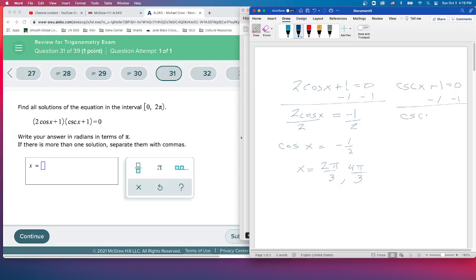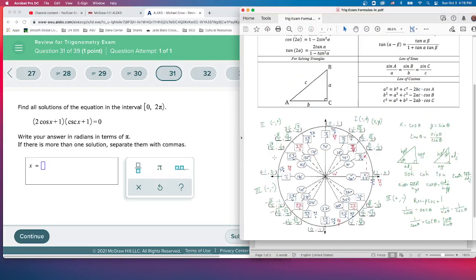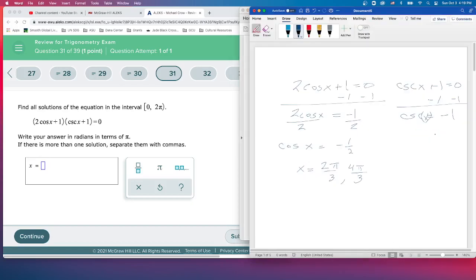We get cosecant(x) = -1. So where does that happen? We have to remember: what is cosecant? At the beginning we did all of this stuff. Cosecant is 1 over sine.